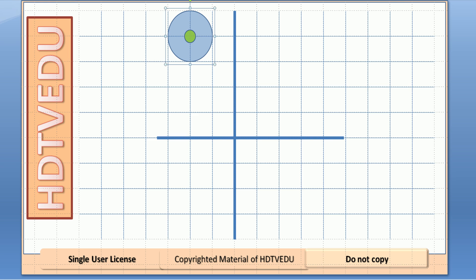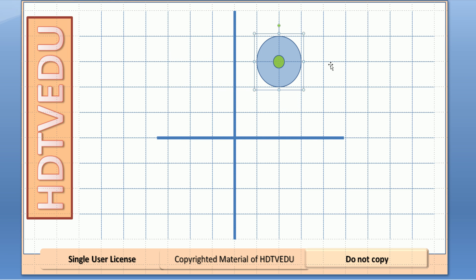Here we have the circle of radius 1 unit. The radius is 1 unit in every direction.